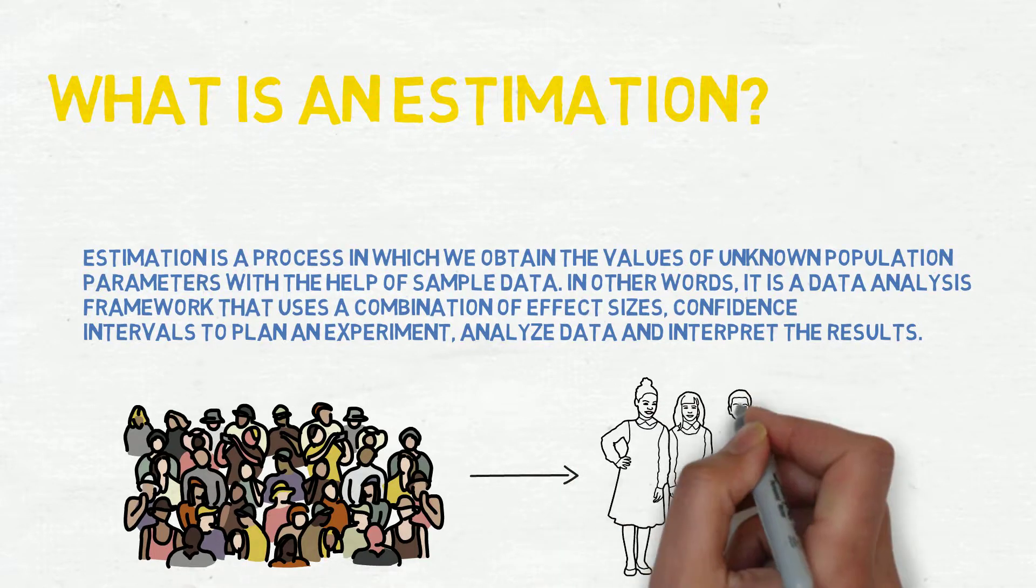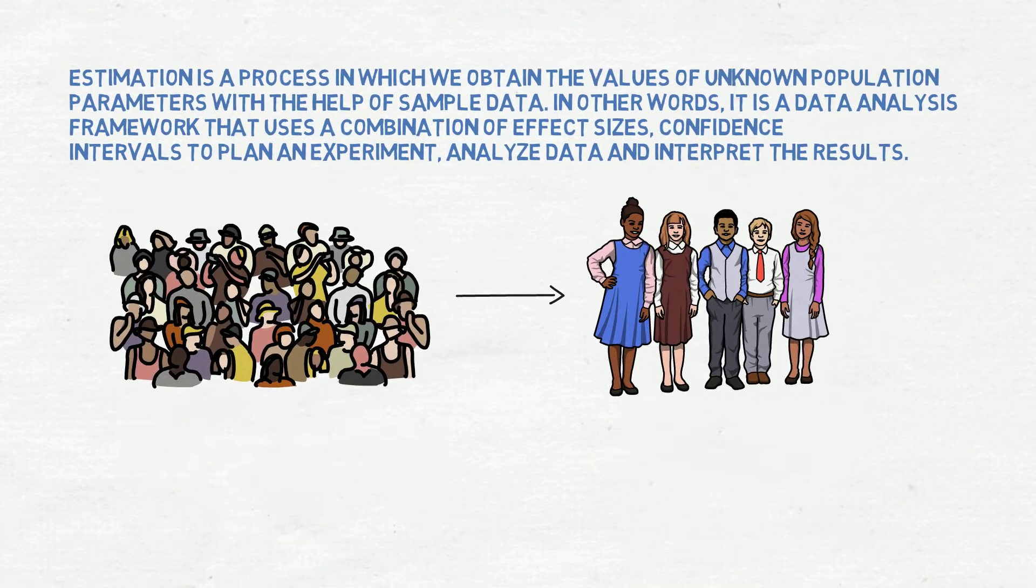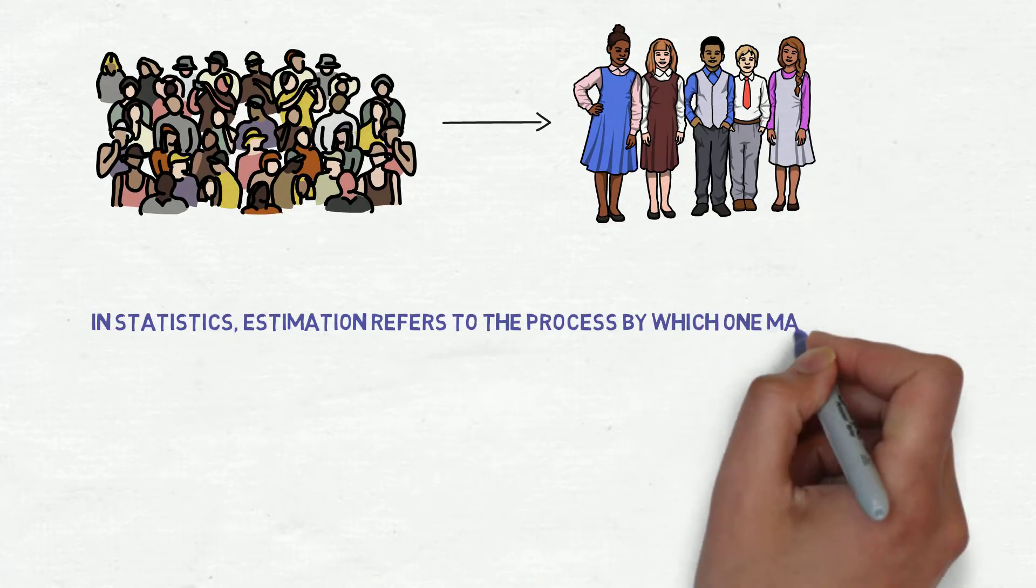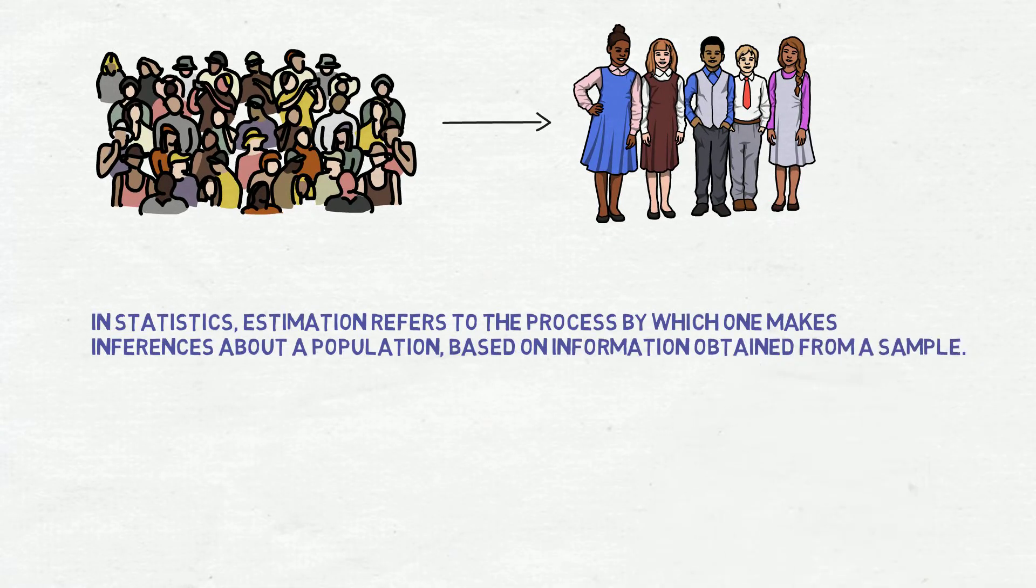The estimator is a method, formula or function that specifically tells how to compute an estimate. In other words, to estimate the value of a population parameter, you can use information from the sample in the form of an estimator.